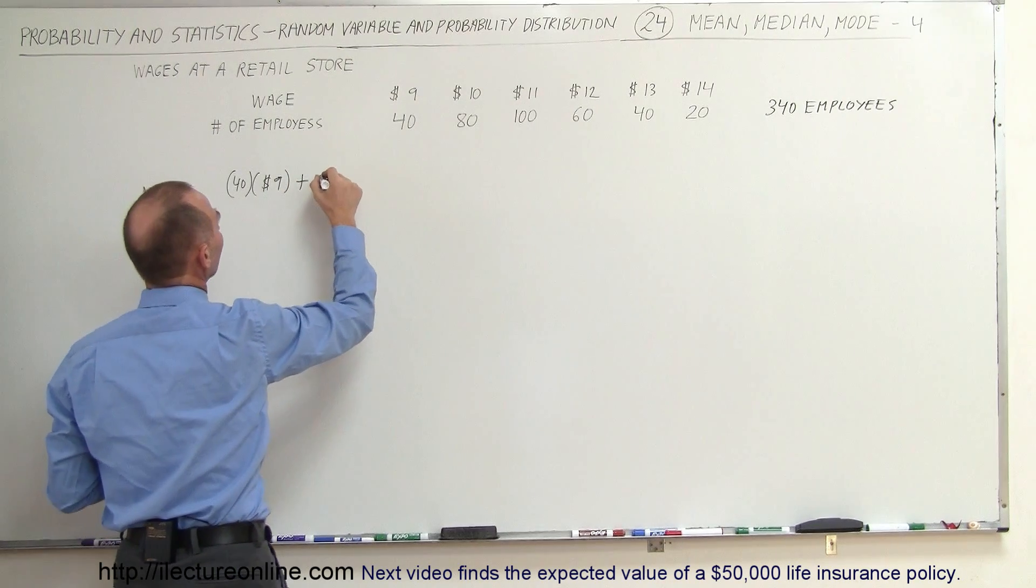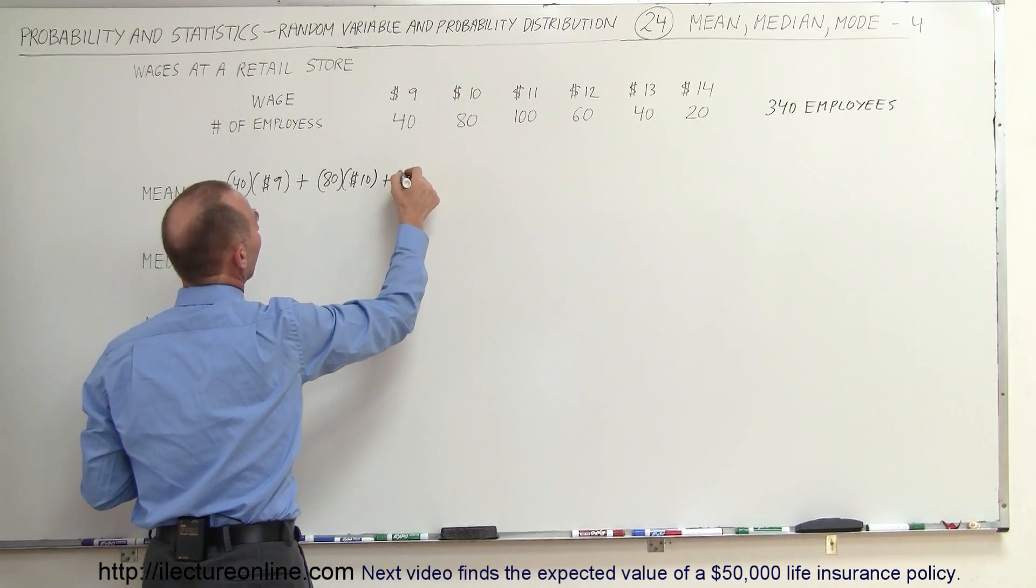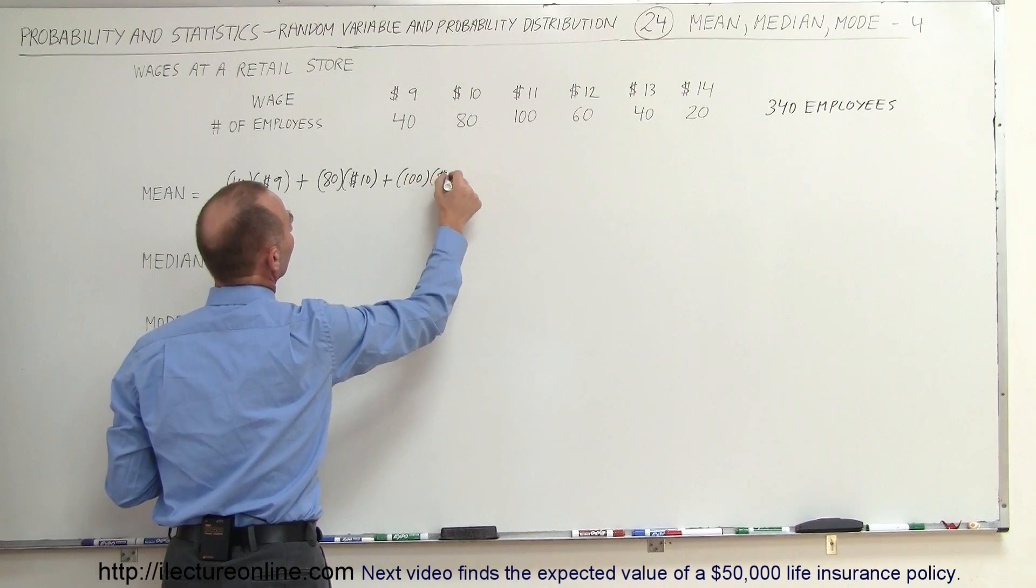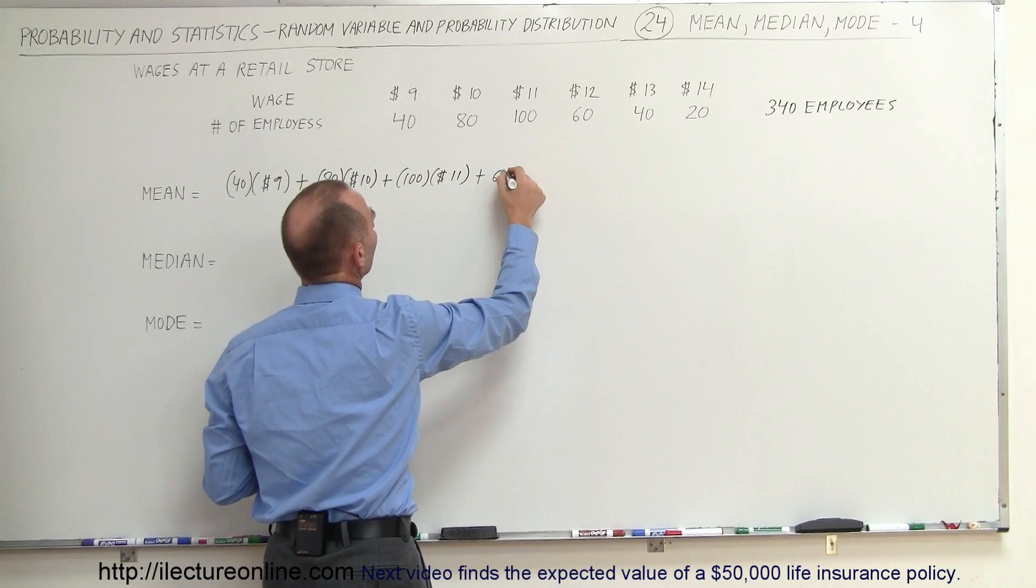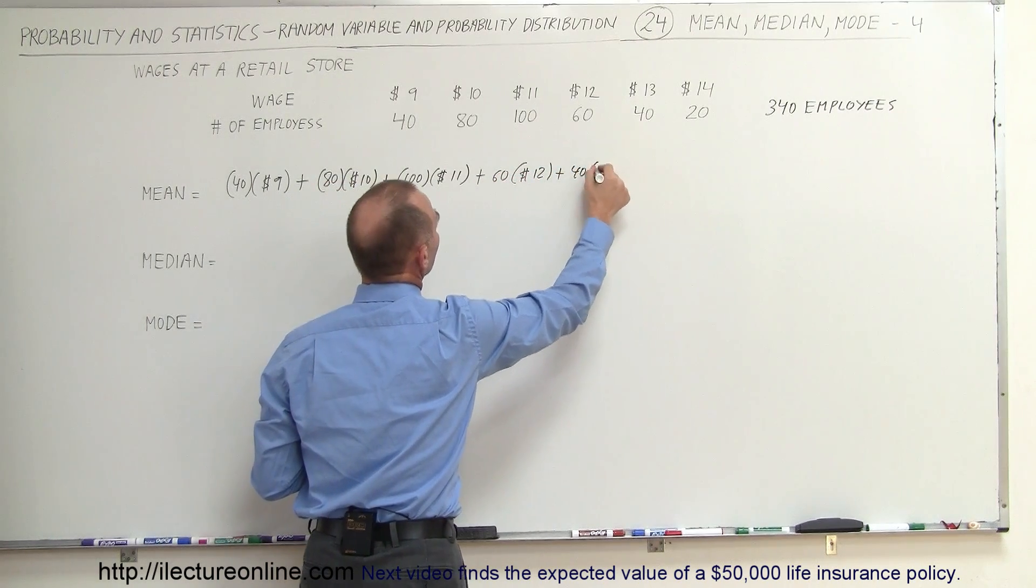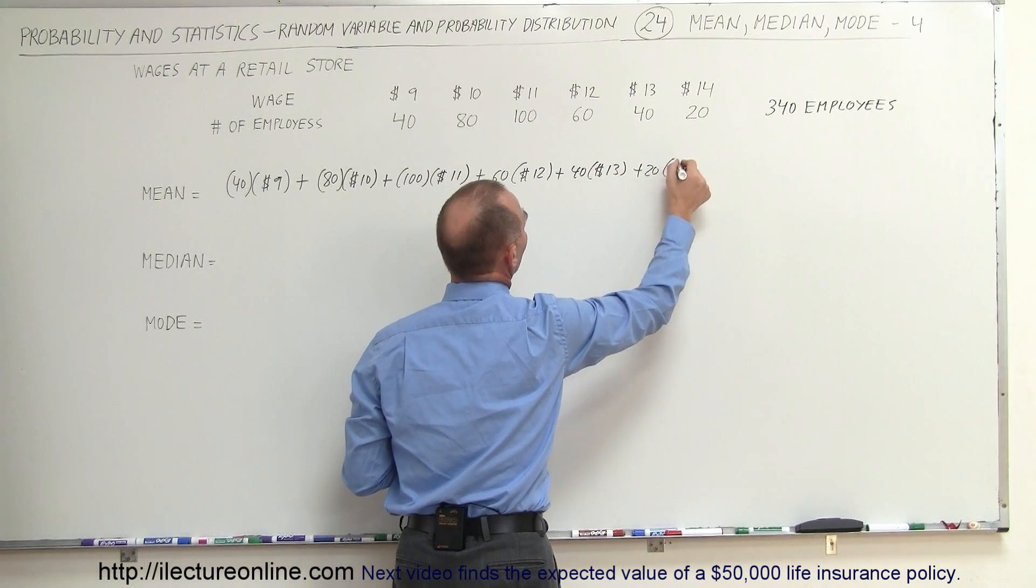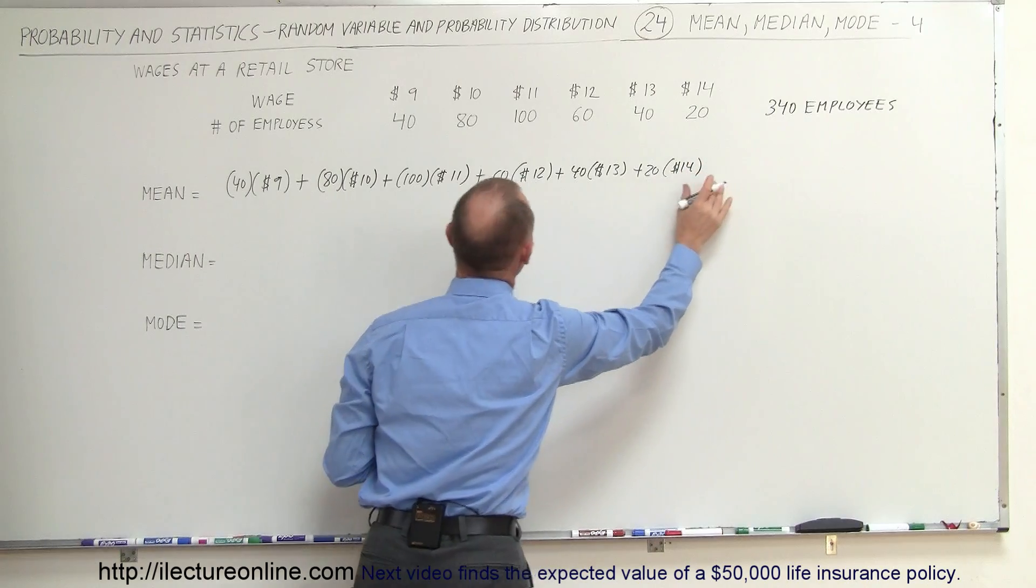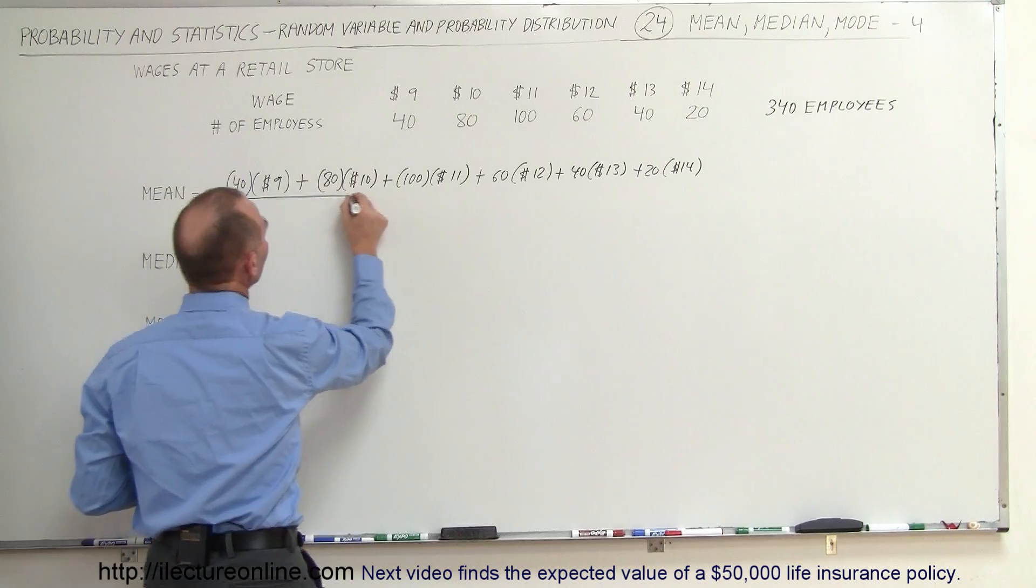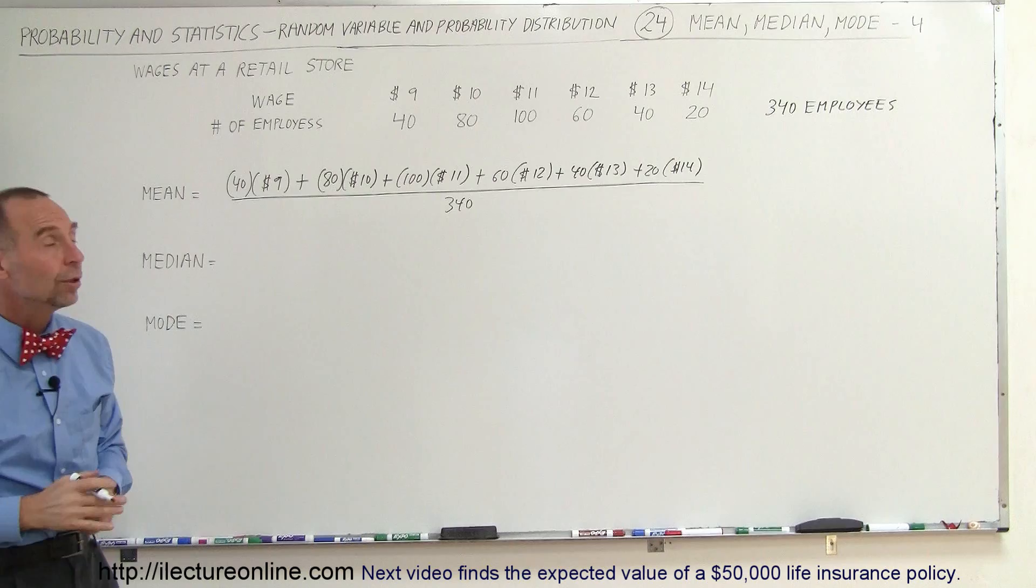Plus, we have 80 employees earning $10, plus we have 100 employees earning $11, and we have 60 employees earning $12. So that's the total amount of money earned by all the employees working for that retail store. And if we divide that by the total number of employees, we will get the average.